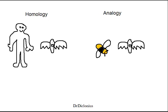Homology and homologous structures refer to structures which share the same ancestry but differ in how they look and in their functions. For instance, here we have the wing of a bat and the arm of a human. Both a human and a bat are mammals; however, the bat uses its wings to fly while the human uses its arms for other things. This is what's called homology or homologous structures.